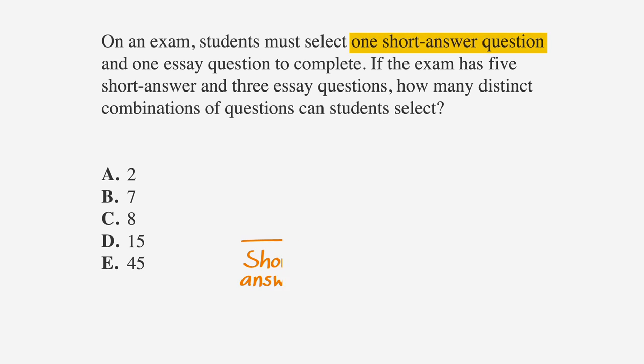In this case, we can just multiply all our numbers together because we have a few different options and can only pick one of each. We know students must choose one short answer question and one essay question, so we just multiply the number of short answer questions to choose from by the number of essays to choose from. We have five short answer questions and three essay questions, so we multiply them to get our answer, which is 15. Choice D is 15, so circle it.